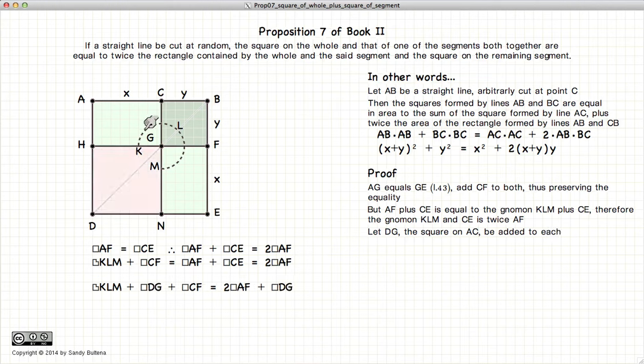Now let's add the square DG to both sides of our equality. So we have KLM plus DG plus CF is equal to twice AF plus DG. But this here, KLM plus DG, is simply equal to the square of AB.